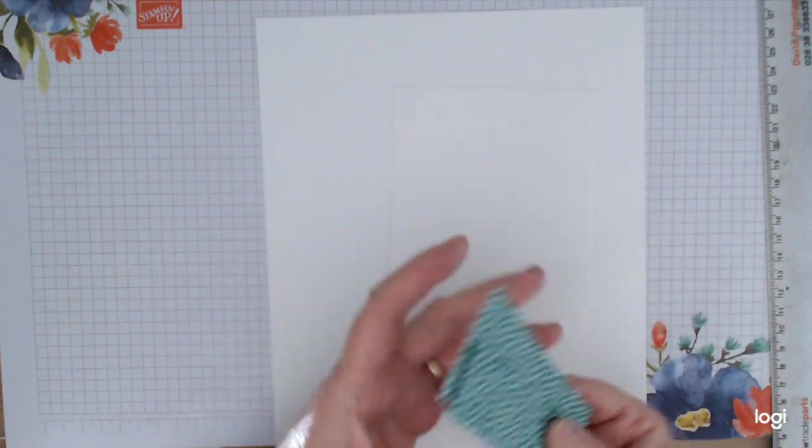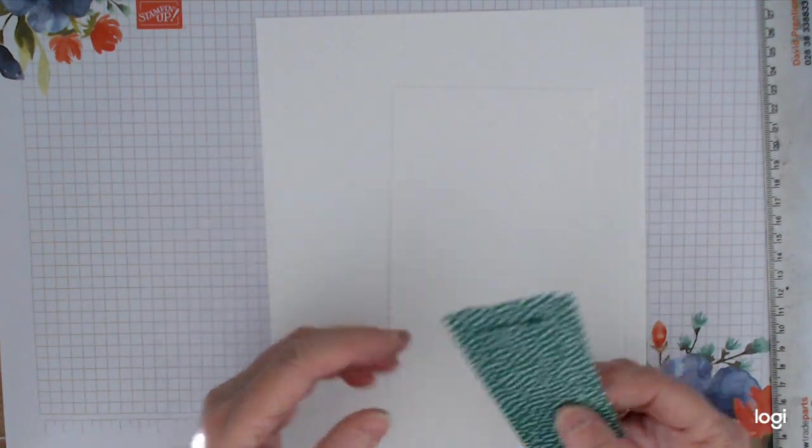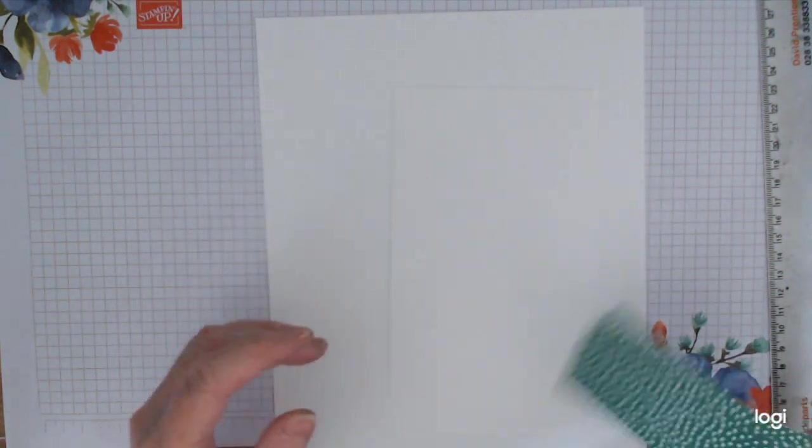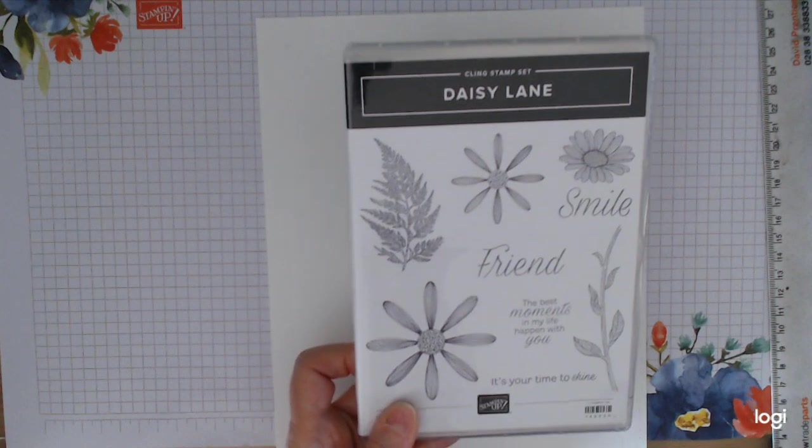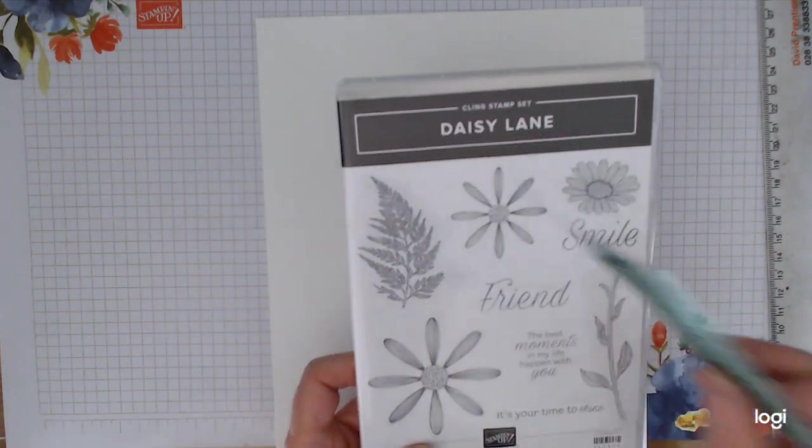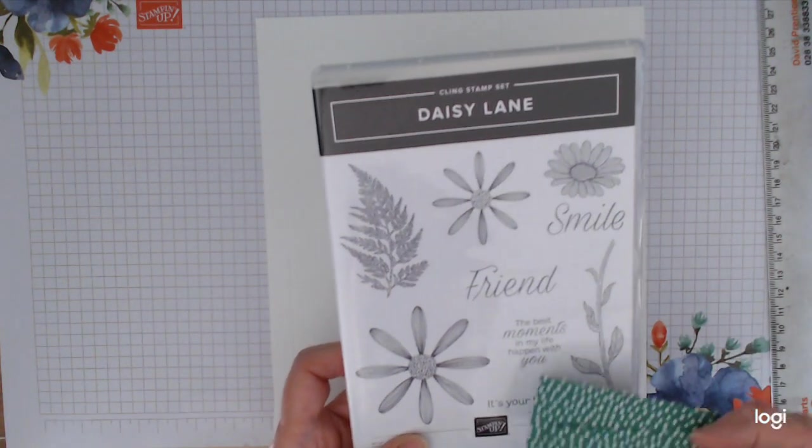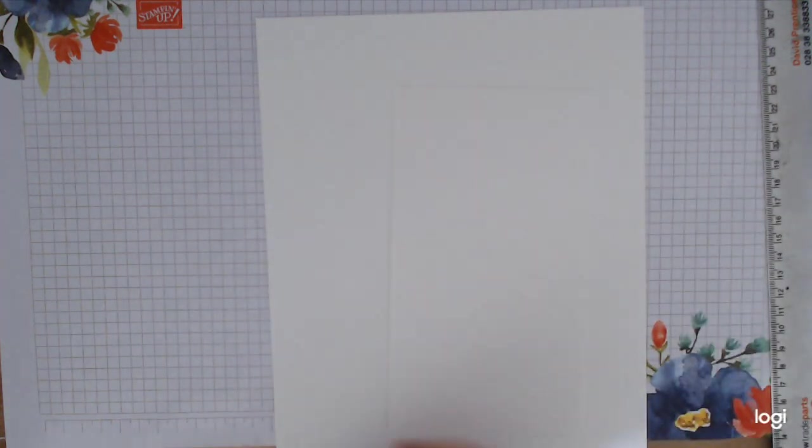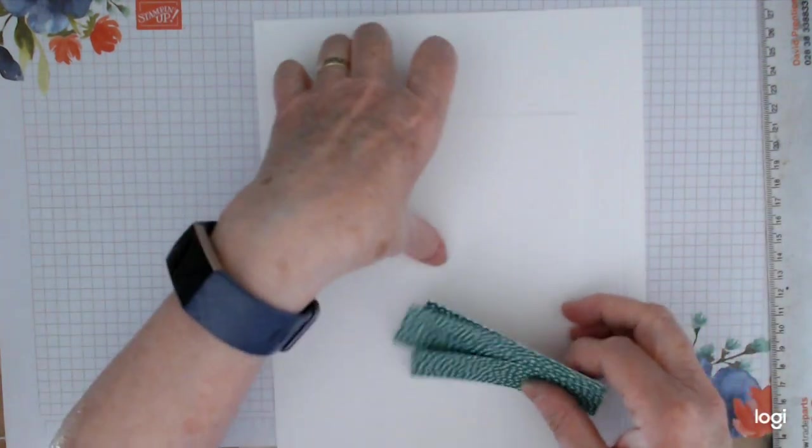So you can get all this out of one sheet of 6 by 6. It's a great little box. You need more obviously for the outside, but if you have any single sheets of your lovely papers left, use them for these boxes. The stamp set is the gorgeous Daisy Lane, which I am a big fan of. I love daisies and it has some lovely sentiments.